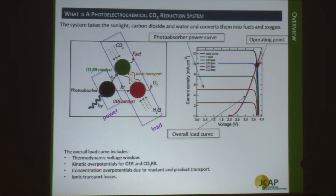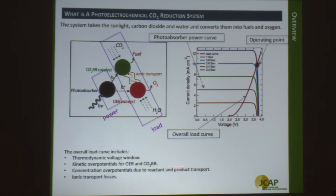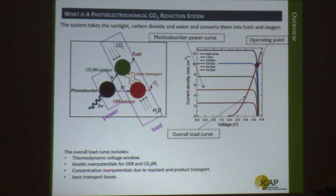On top of thermodynamics, you have kinetic overpotential for the OER and CO2R reactions, depending on how good your catalysts are and what your target fuel is. For CO2 reduction, the kinetic overpotential can range from tens of millivolts all the way to over a volt. Additional voltage losses include concentration overpotential due to reactant and product deviations from bulk values, and ionic transport losses — both closely associated with detailed cell design and architecture.